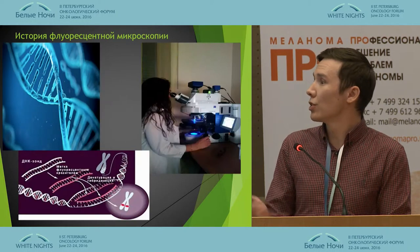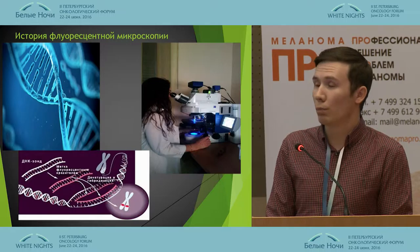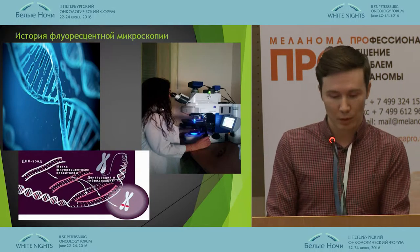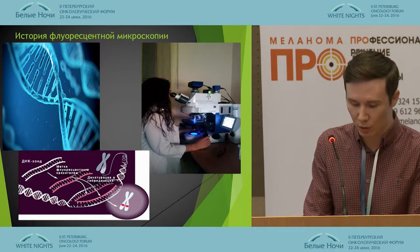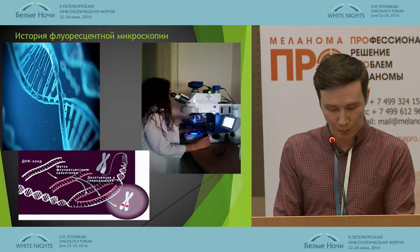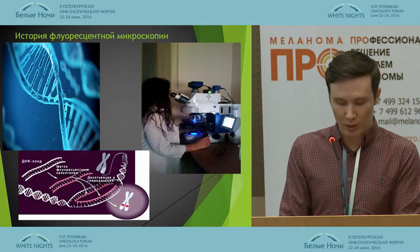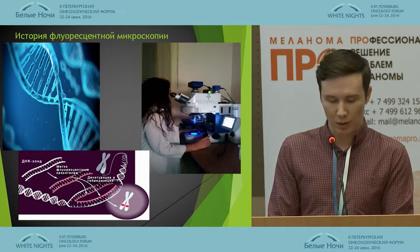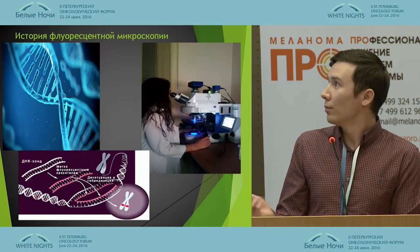Fluorescence microscopy appeared in the early 20th century as UV microscopy. In 1911 the fluorescent microscope was designed, and fluorescent colors were introduced in practice in 1935. Since the 1970s, DNA research started, allowing localization of genes on chromosomes by hybridization — in radioactive form in 1969, and in fluorescent form in 1986. This technique is called fluorescent in situ hybridization, or FISH.